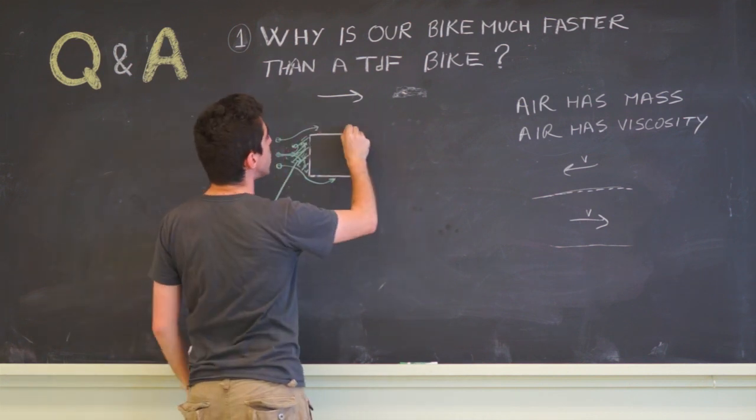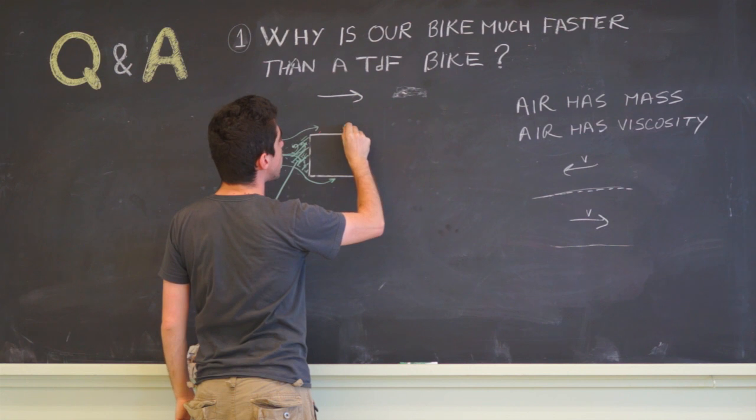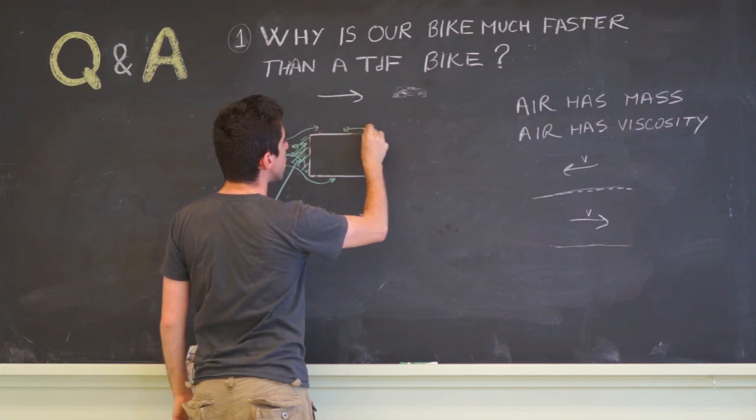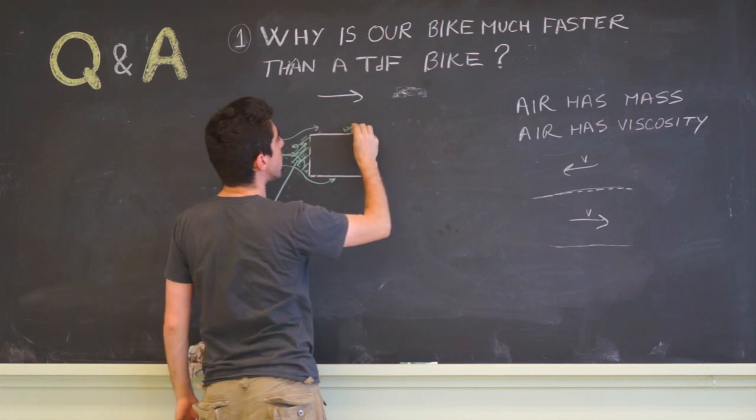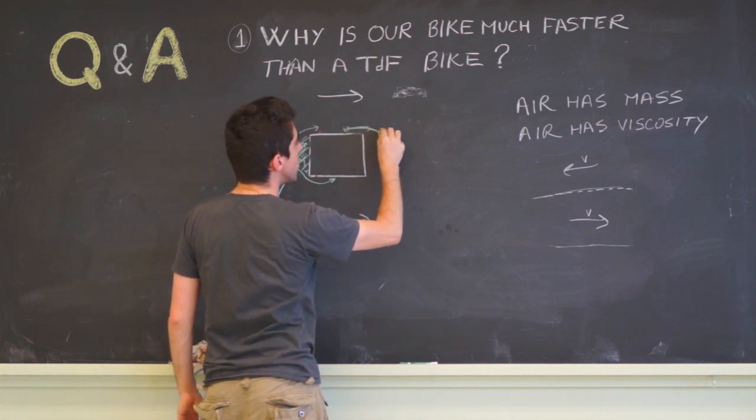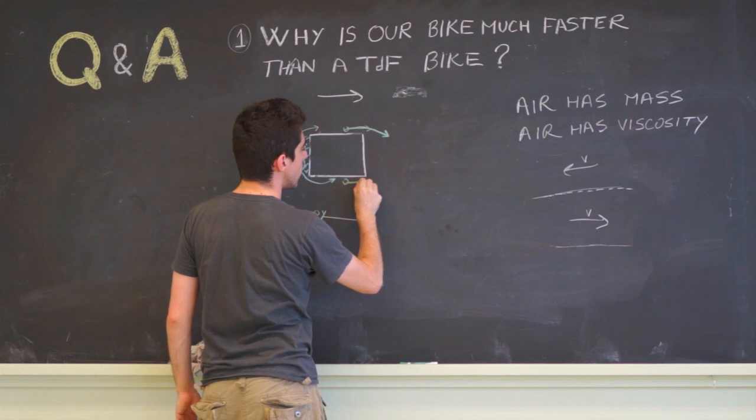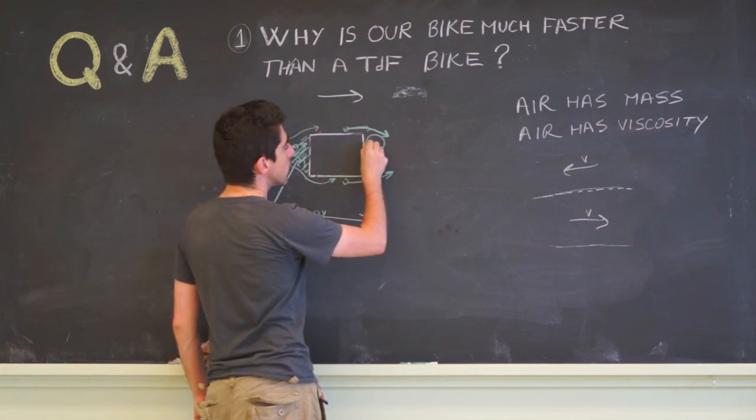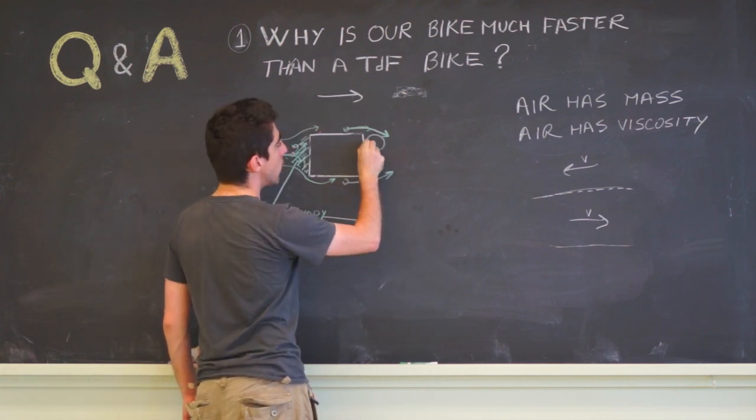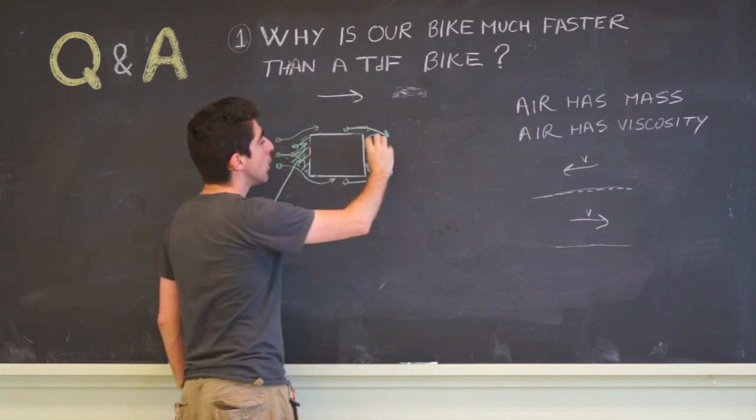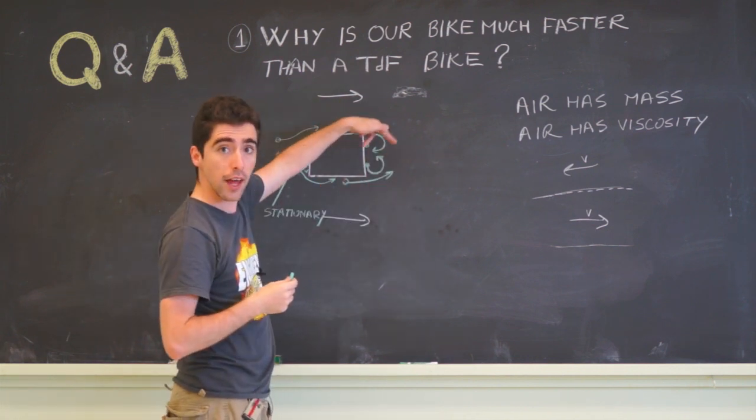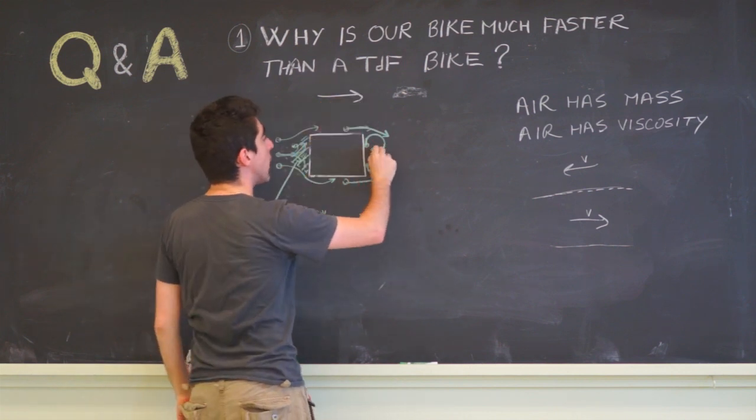Instead what's going to happen is this particle will move in this direction, will try to curve around to the side of the box but it won't be able to curve fast enough, so it will move like this. Now these particles next to the box can only move along the wall of the box. They will swirl and be trapped behind the box.